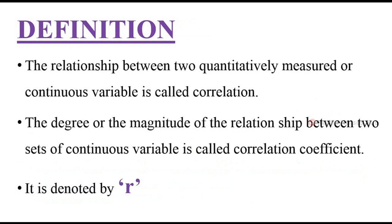The relationship between two quantitatively measured or continuous variables is known as correlation, whereas the degree or magnitude of the relationship between these two variables is known as the correlation coefficient. The correlation coefficient is denoted by the small letter r.